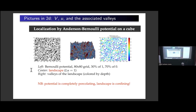This is the same potential but in 2D. Maybe it's a Bernoulli potential, meaning random points are either one or zero. The second picture is the landscape function, and the third picture shows the valleys of the effective potential. The lines are crest lines. In the middle of the crest lines, you can find valleys — the places where U is large and V is small.